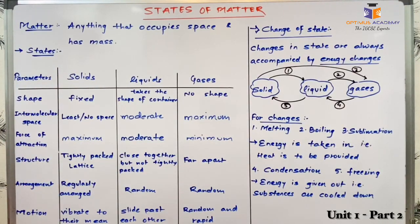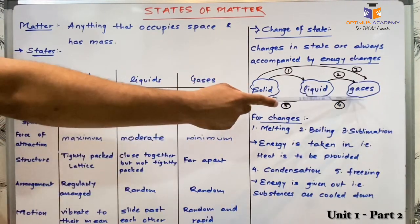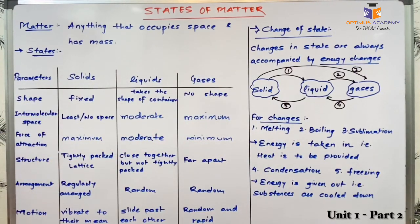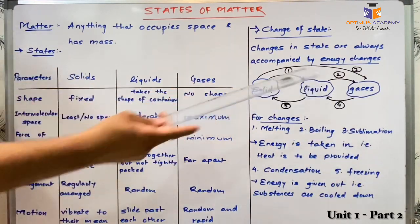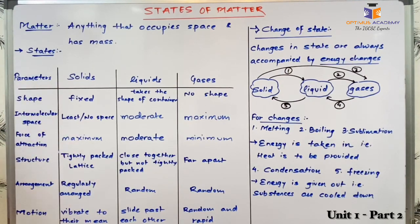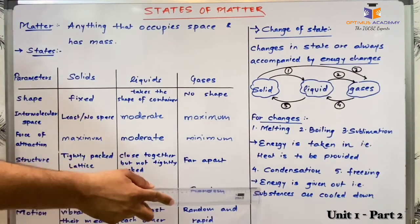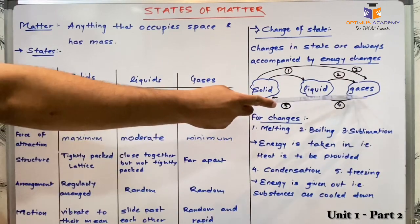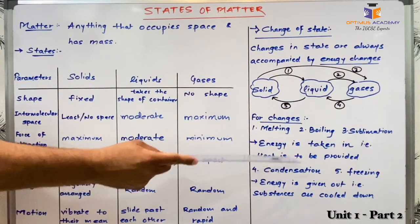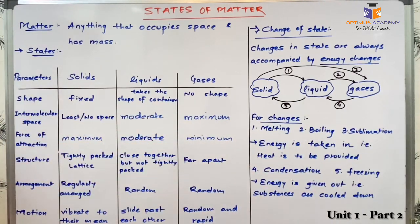When we want to go from right to left — that is, to turn gases to liquid or liquid to solid — we have to take the energy out from the molecules. When we provide heat energy, molecules go away from each other due to increased kinetic energy; opposite to that, when we want to decrease kinetic energy we cool the substance down. Change from gaseous state to liquid is called condensation; liquid state to solid is called freezing.